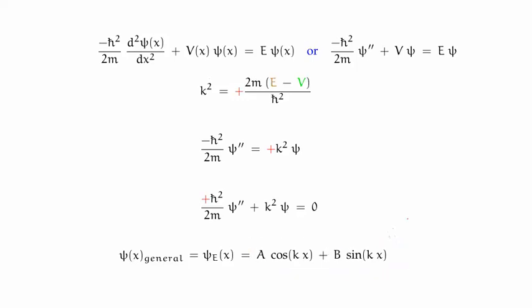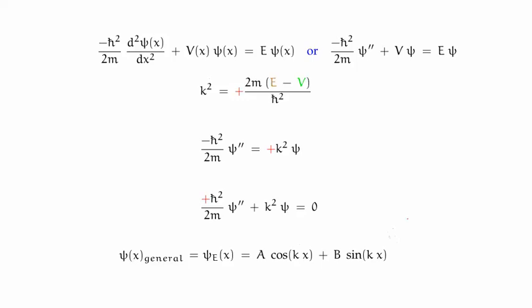It just happens that when the well has one of the nodes at zero, then one of the coefficients — in that case A — goes to zero. So technically the cosine solution is always there; it just happens that the coefficient is zero. So mathematically it exists, though physically it doesn't.